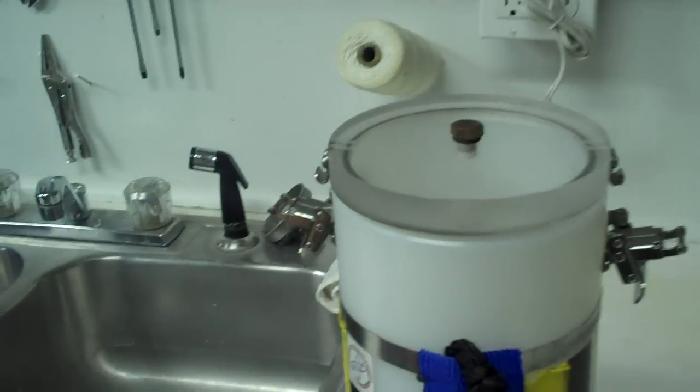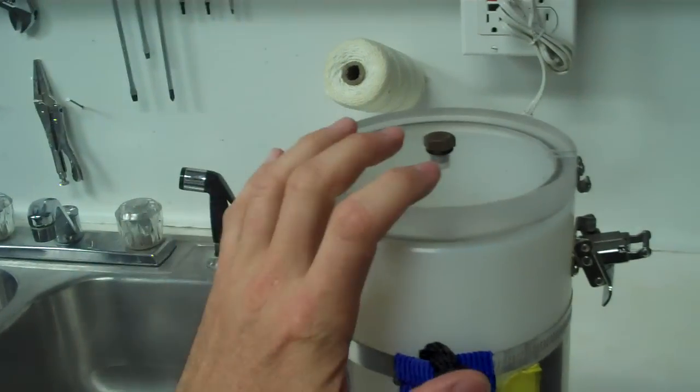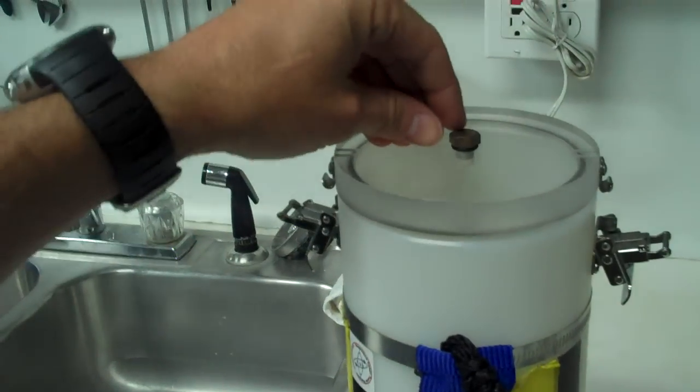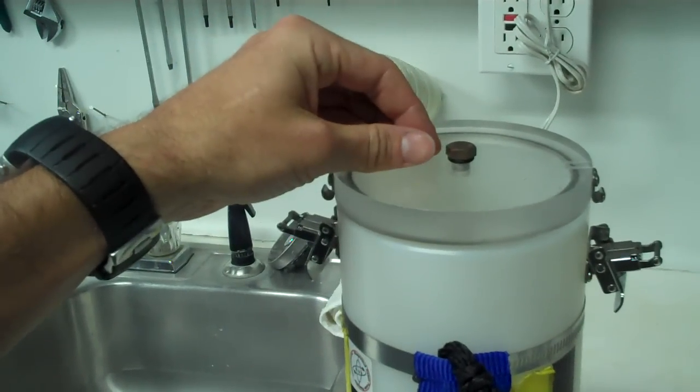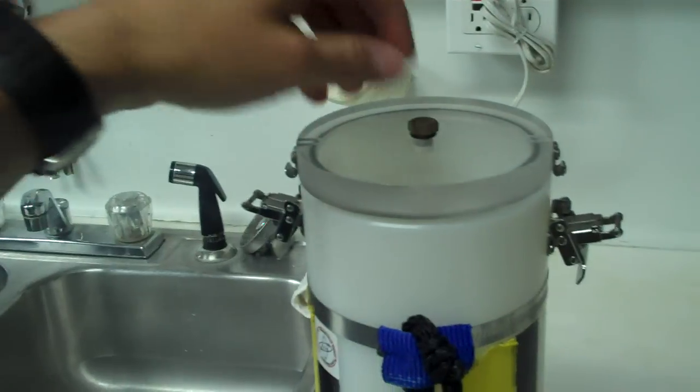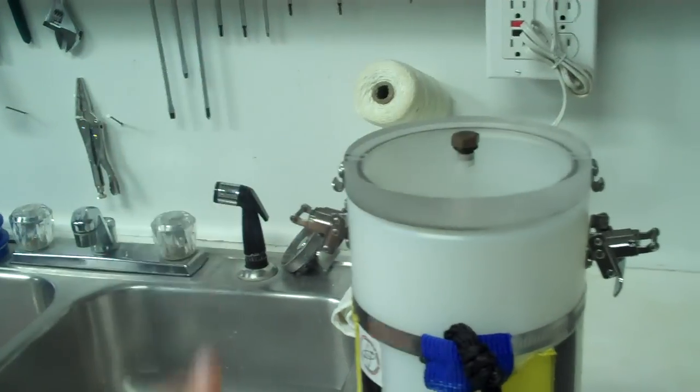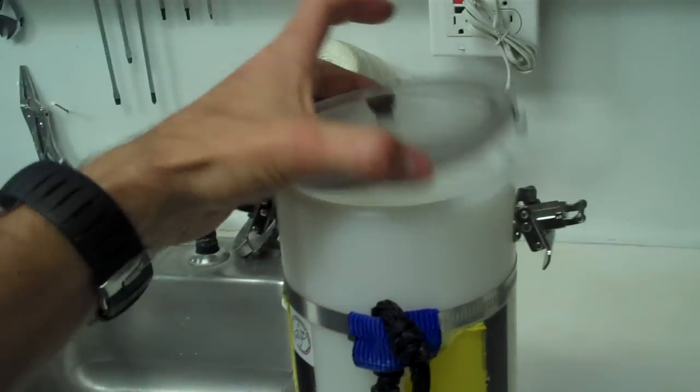Once you bring this canister down to depth, there'll be a significant amount of external pressure as compared to the one atmosphere pressure that's inside the tube. So once you're in a dry area underwater like a habitat, then you can loosen this screw here and that equalizes the pressure and you can then get the lid open.